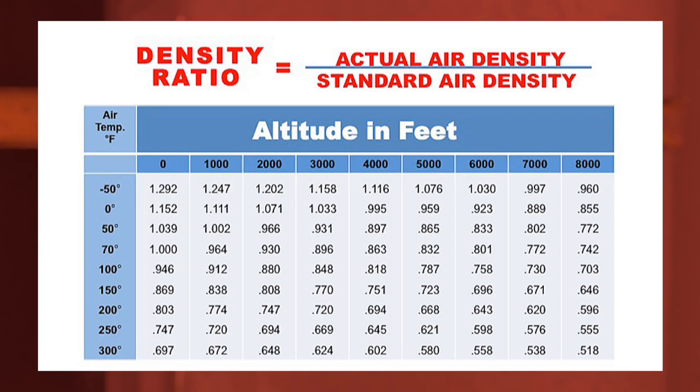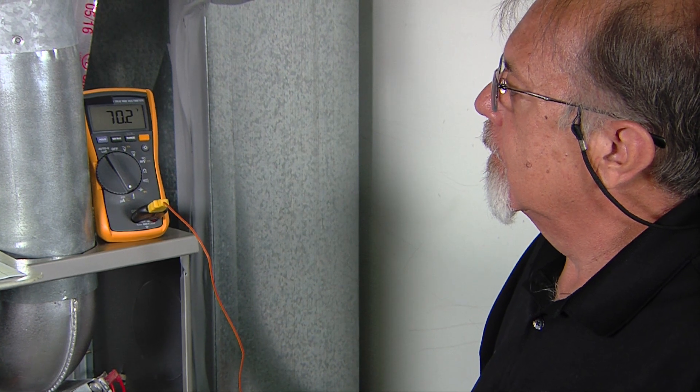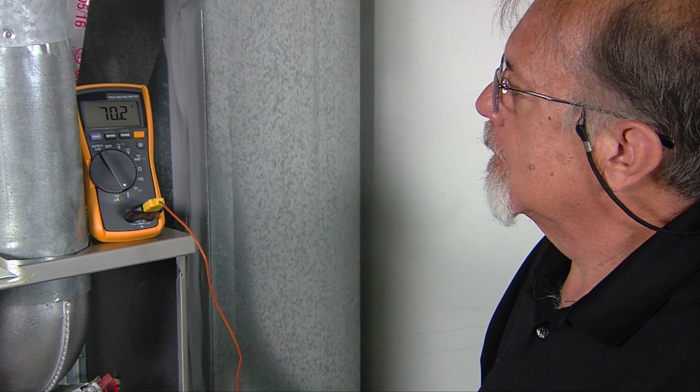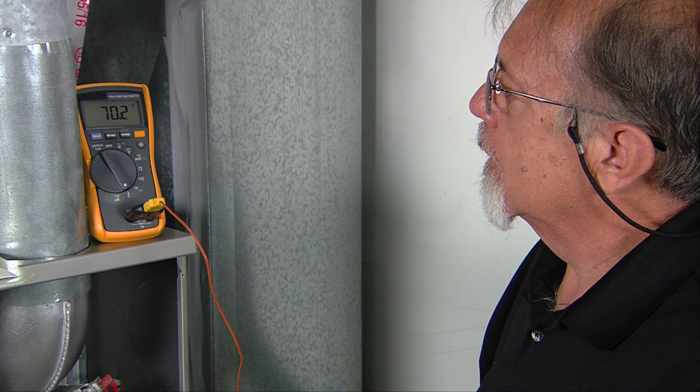We are almost finished with the CFM calculation. Air has different properties at different elevations and temperatures. These differences can be accounted for using the density ratio factor, which is based on the altitude the equipment is installed at and the temperature of the air. This is where you will use the temperature readings we discussed in part one of this video, taking the measurements.